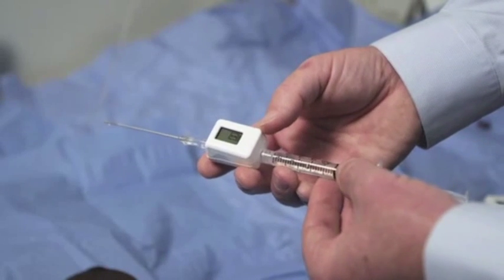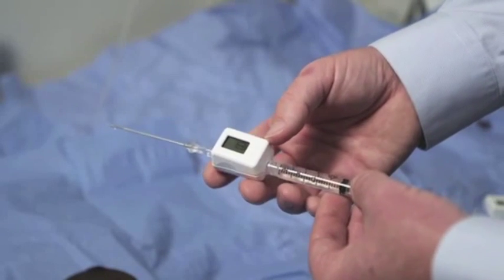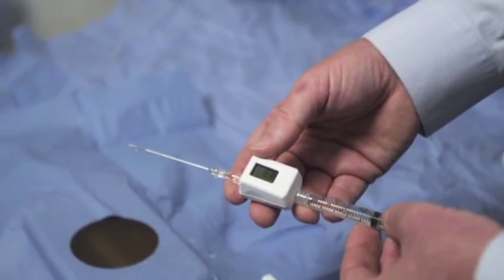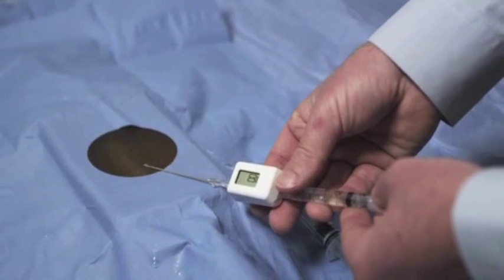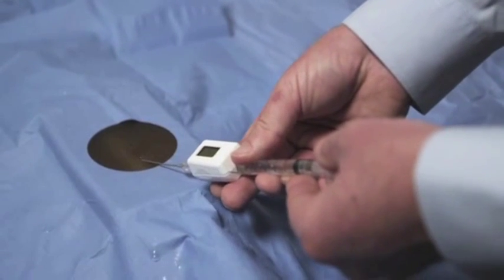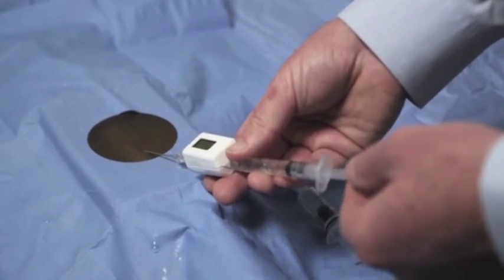The device is now ready for measuring compartment pressure. Proceed to the prepared limb and insert the needle into the tissue until the compartment is reached.